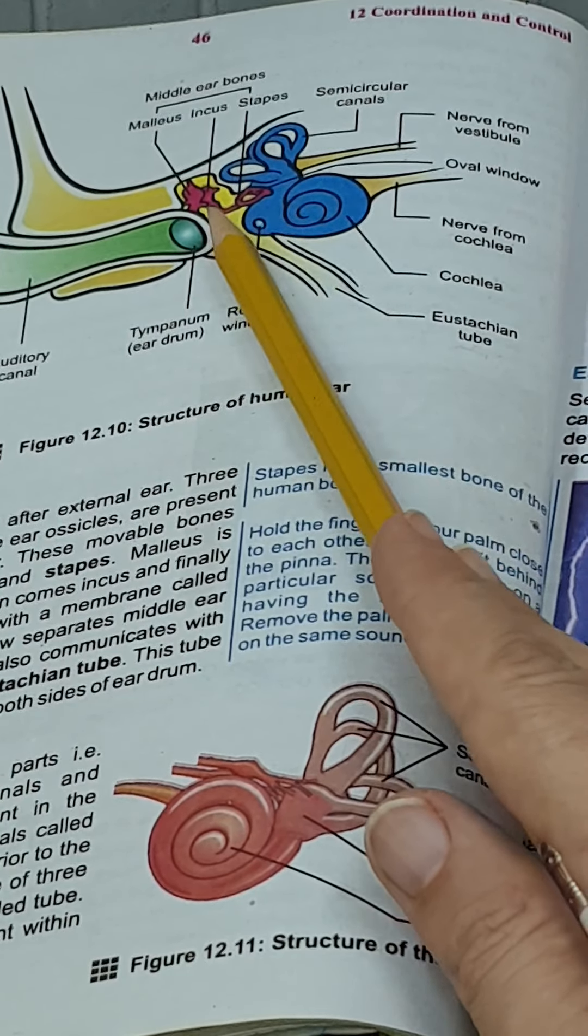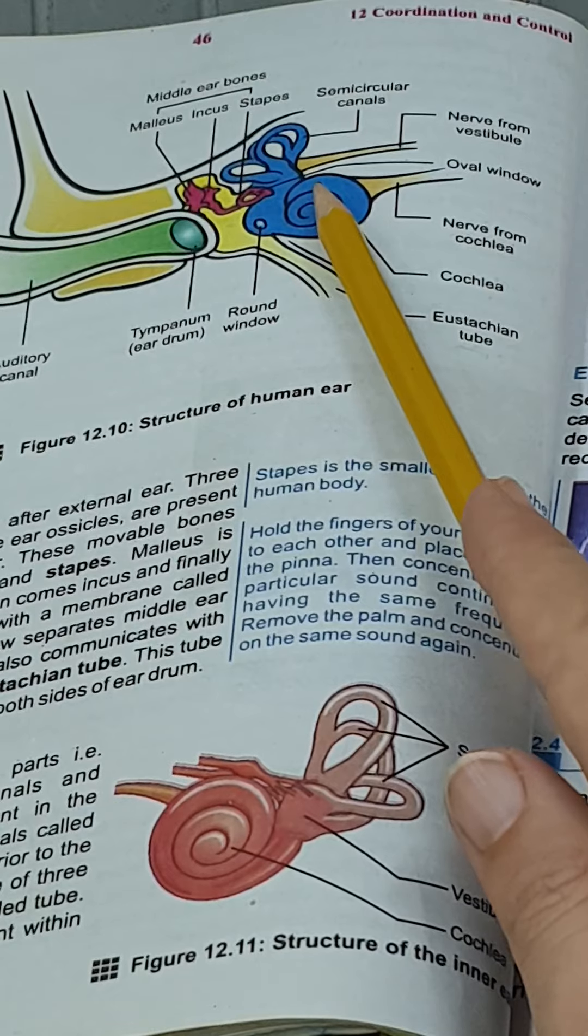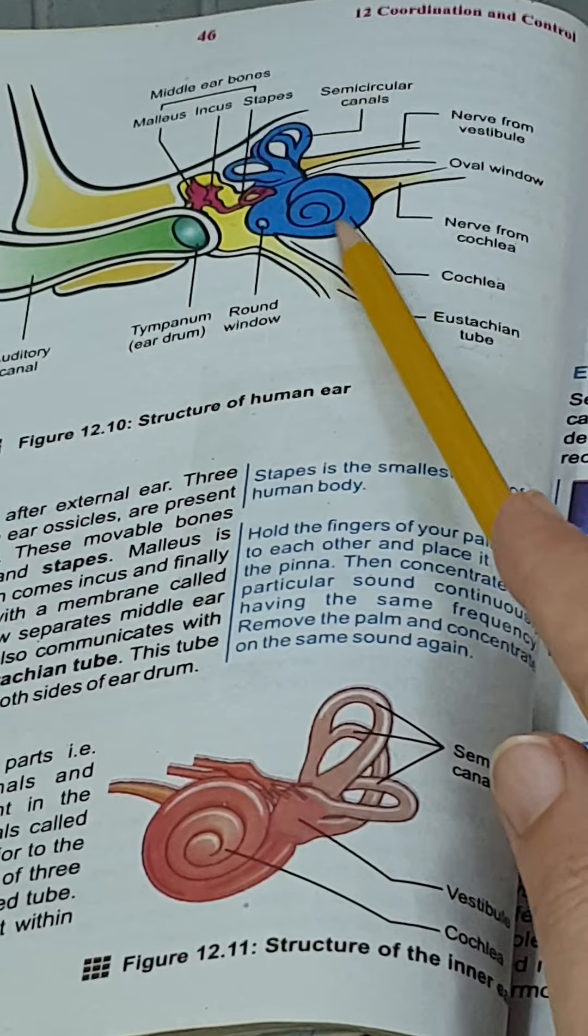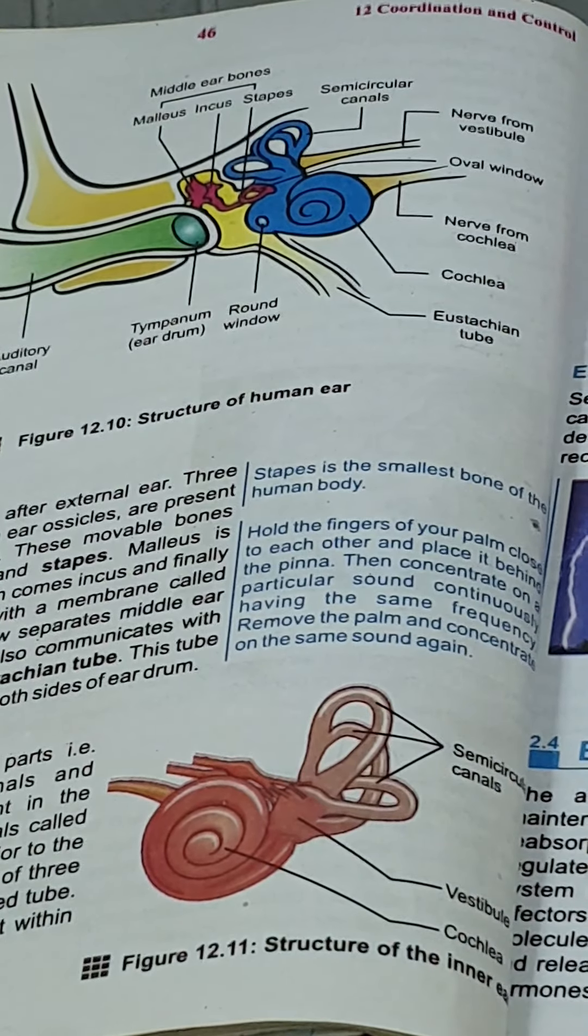So the two functions - one is hearing and the second is the balance and position of the body - are controlled by this part of our body. Thank you so much.